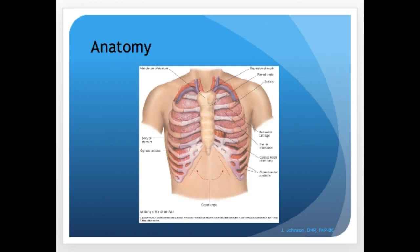It's important to note first where the intercostal spaces are and how they're numbered. The intercostal space is the area between the ribs, and they are numbered by the rib above. So the second intercostal space, or second ICS, is below the second rib. To find the second rib, start at the suprasternal notch just between the clavicles, then below that is the manubrium, and the horizontal bony ridge beneath that is the angle of Louis, also called the sternal angle. Lateral to the sternal angle is the second rib and costal cartilage.